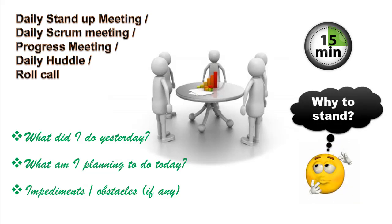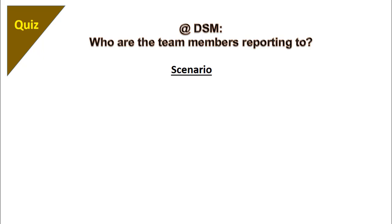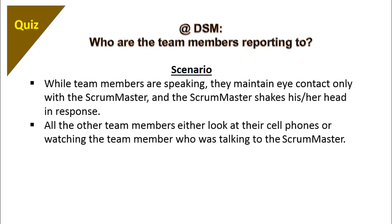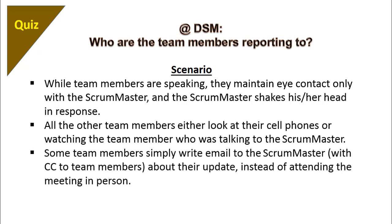Is it important to stand up in the meeting? Standing up and talking gives a sense of urgency because the meeting should be finished in 15 minutes. Some teams do it like chai pe charcha, meaning conducting the meeting over tea or coffee. At a daily stand-up meeting, in the following scenario, tell me who the team members are reporting to. While team members are speaking, they are maintaining eye contact with the scrum master and the scrum master notes in response. All the team members either look at their cell phones or watch the team member who is talking to the scrum master. Some team members simply write email to the scrum master with copy to all team members mentioning their updates instead of attending. All these things are indicative of a non-collaborative environment and the scrum master being process owner is responsible for correcting it.